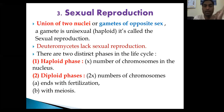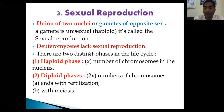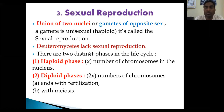In the previous lecture, we started sexual reproduction. Whenever we say sexual reproduction, it means there should be a fusion or fertilization of male and female gametes, or in some cases, the gametangia. The union of two nuclei or gametes of opposite sex — a gamete is unisexual, that is haploid — is called sexual reproduction.